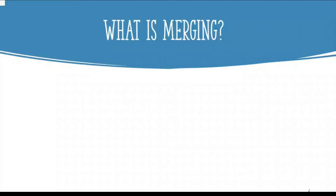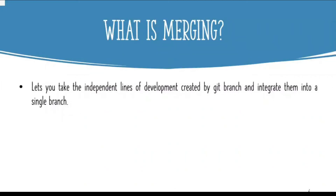A typical workflow for managing branches in git is to create a separate branch for developing any new features or changes. Once the new feature is in good shape, we merge the separate branch back into the main trunk of code. Merging is the term that git uses for combining branch data and history together. We'll use the git merge command which lets us take the independent snapshots and history of one git branch and integrate them into another.